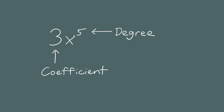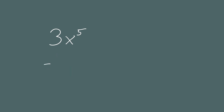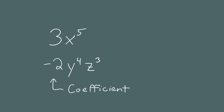Now let's look at a monomial with more than one variable: negative 2 times y to the 4th times z cubed. This is a monomial with coefficient negative 2, and two exponents — the exponent of y is 4, and of z is 3. When a monomial has more than one variable, the degree is the sum of the exponents. So the degree of this monomial is 4 plus 3, which is 7.